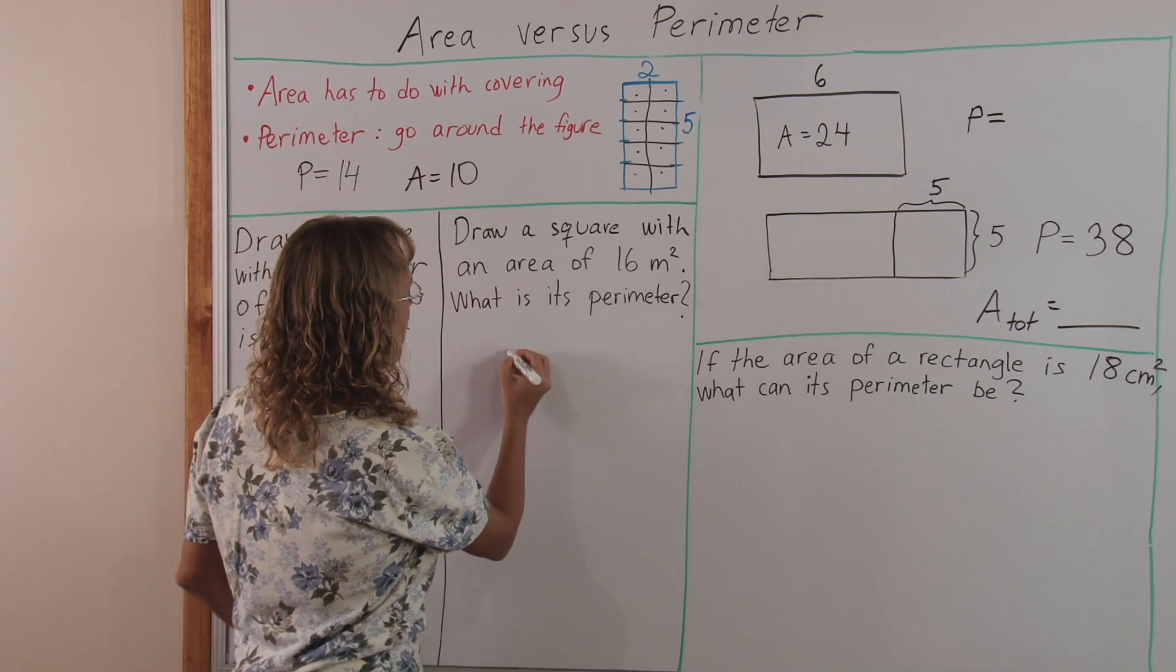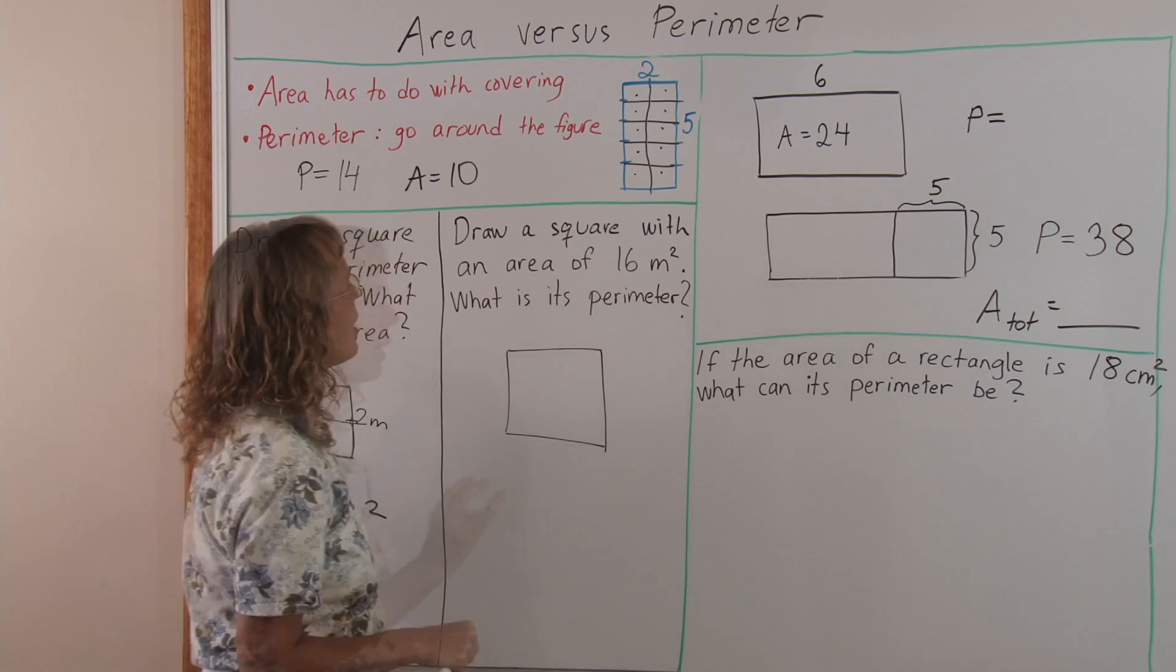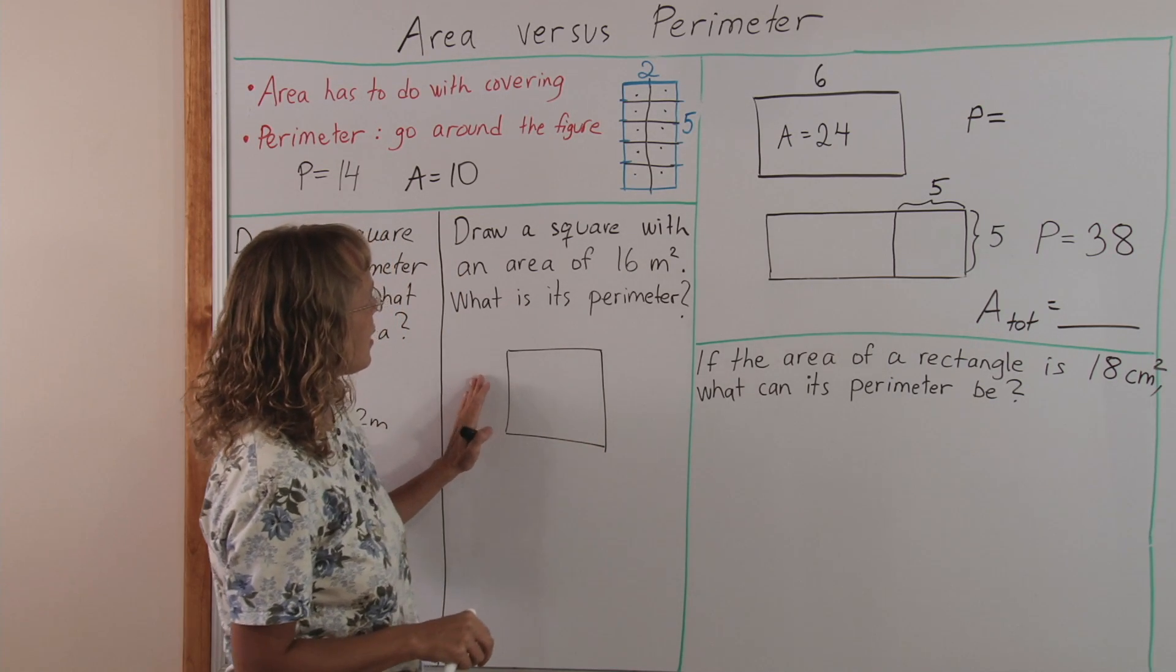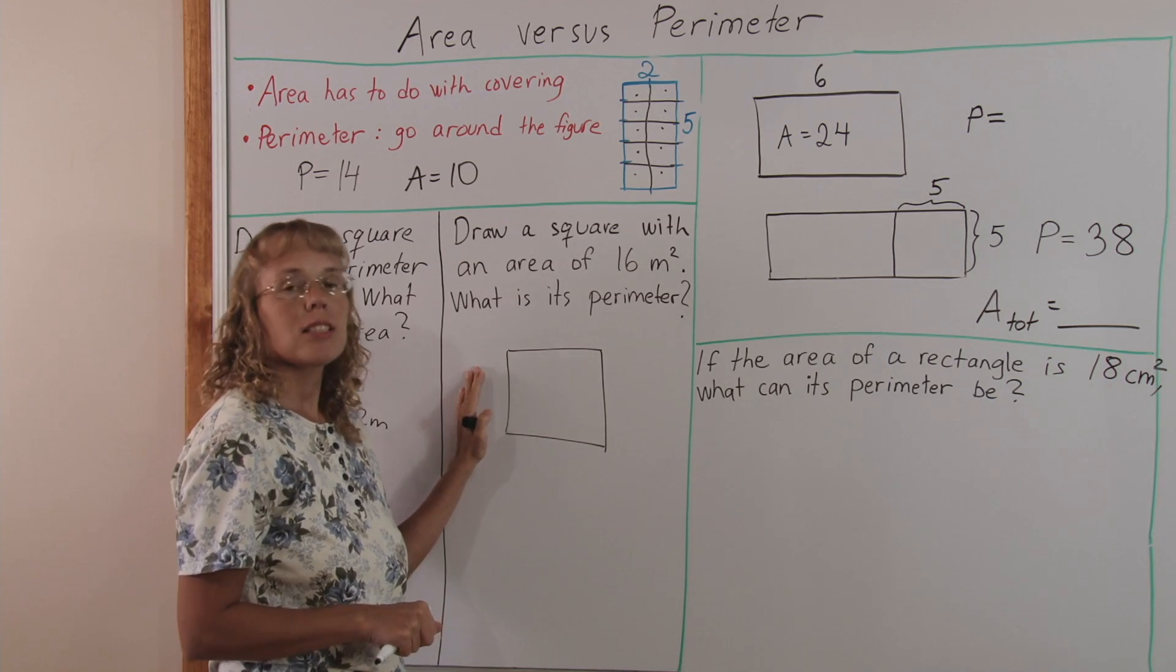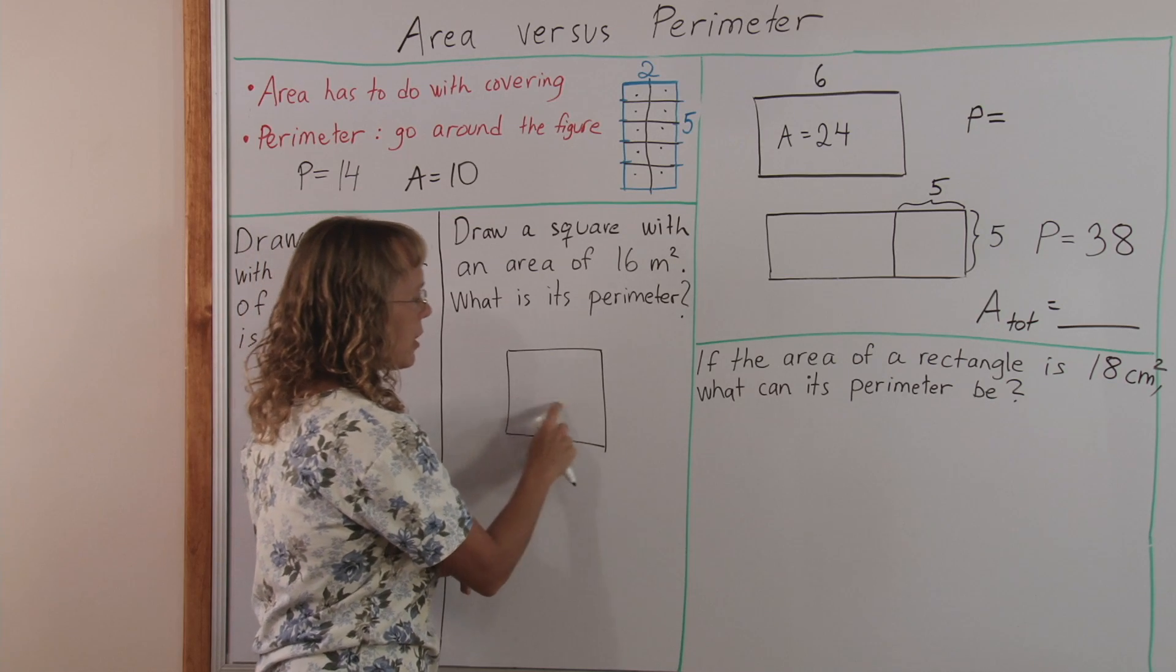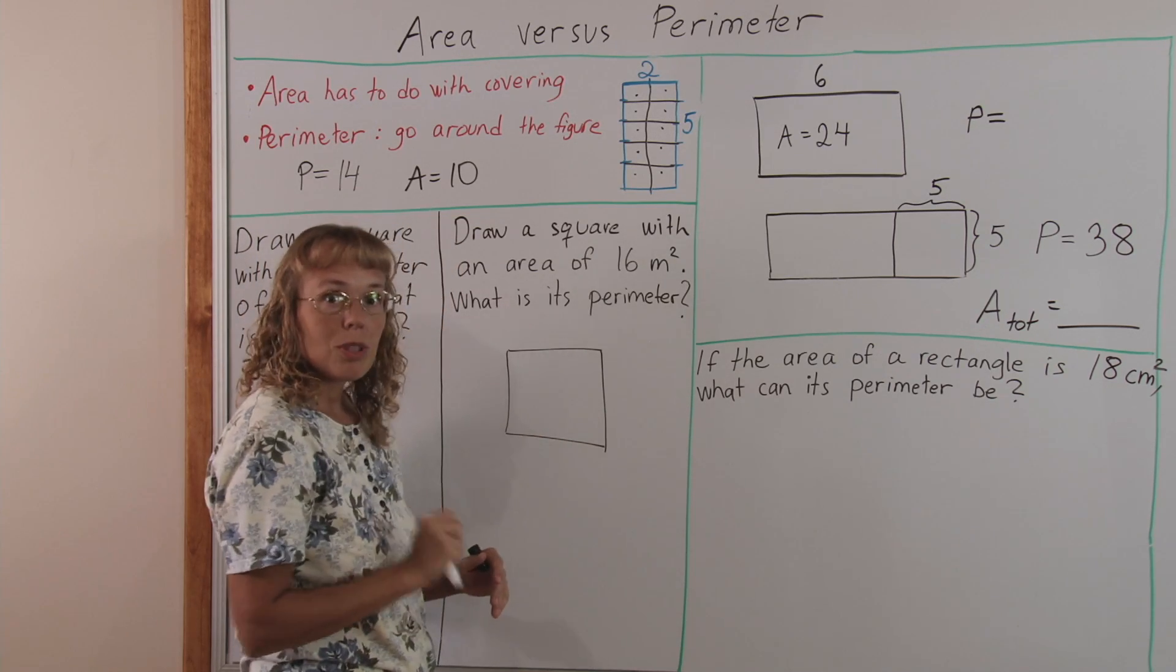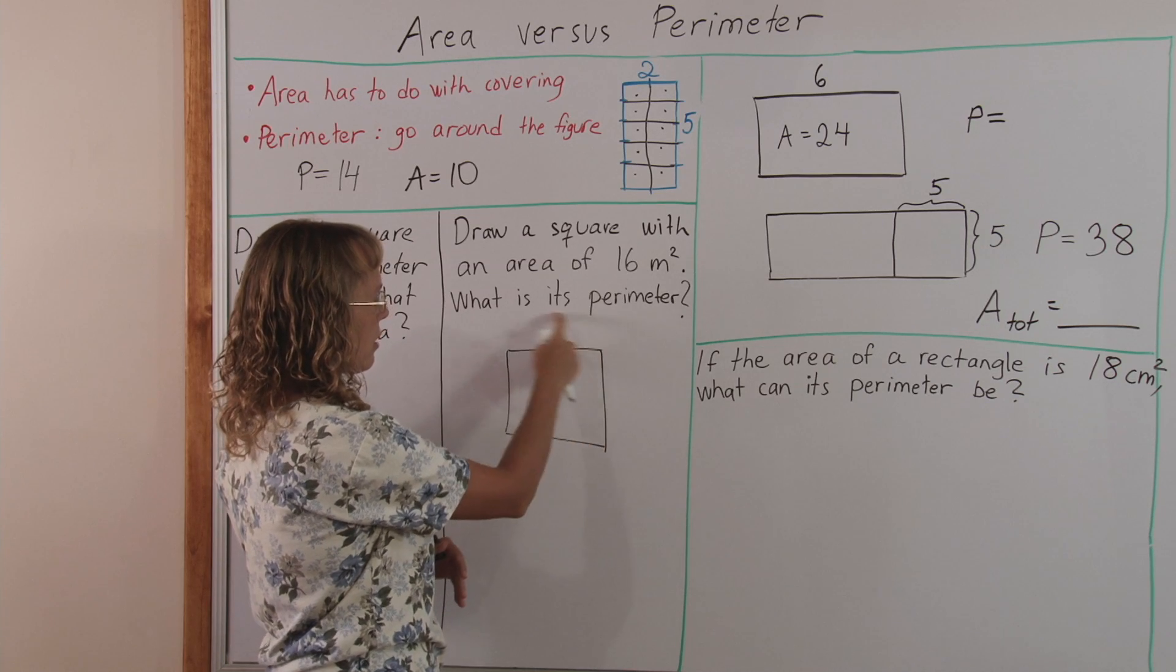And then here, again I will sketch my square, and here it is asking us to draw a square with an area of sixteen square meters. Now the area is known, how many little squares are inside it is known, there's sixteen little squares here, and it's asking how long is it all the way around.